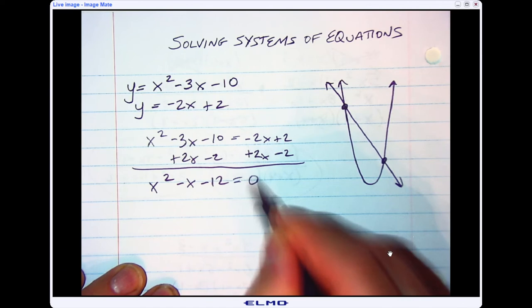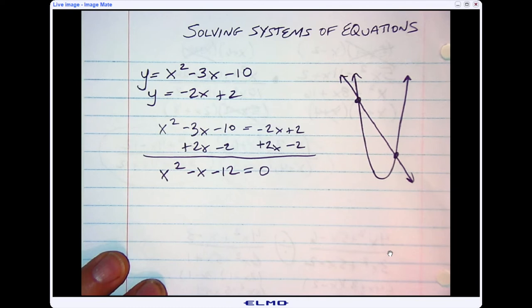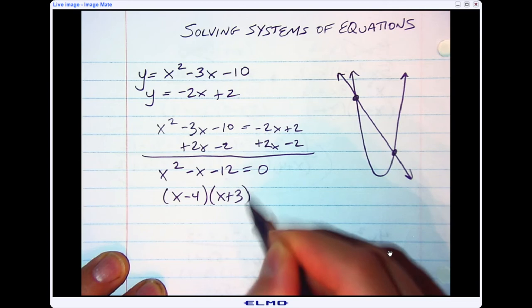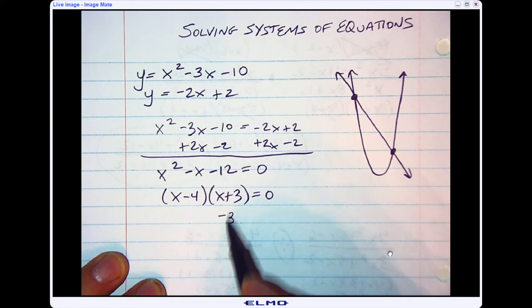Now you can use any of those methods we talked about to solve a quadratic. You could factor, complete the square, quadratic formula. As I look at this one, this one is actually factorable to x minus 4 and x plus 3. So if I want to find out when this equals zero, one answer has to be negative 3, and the other answer is 4.